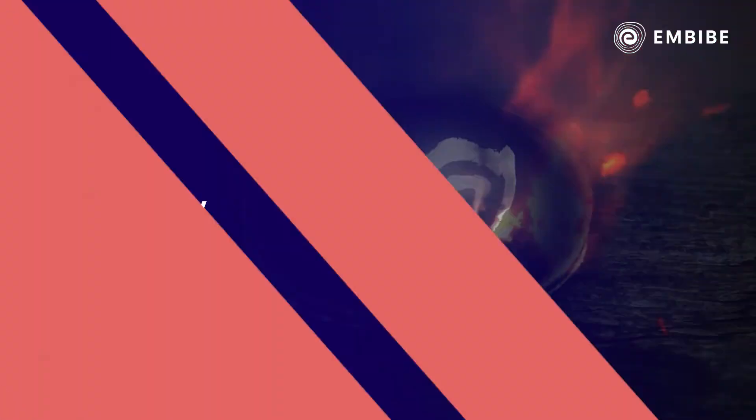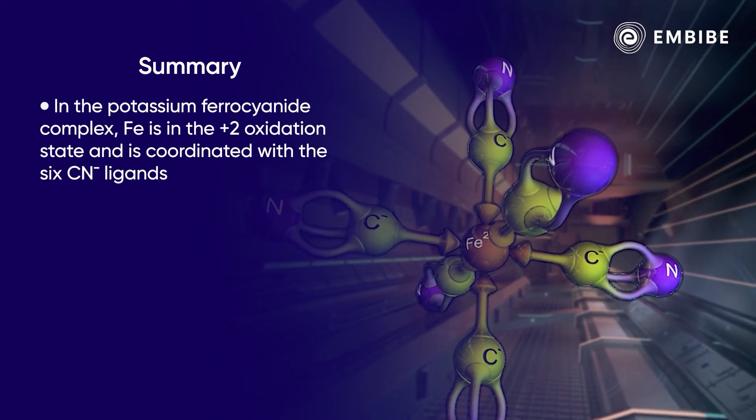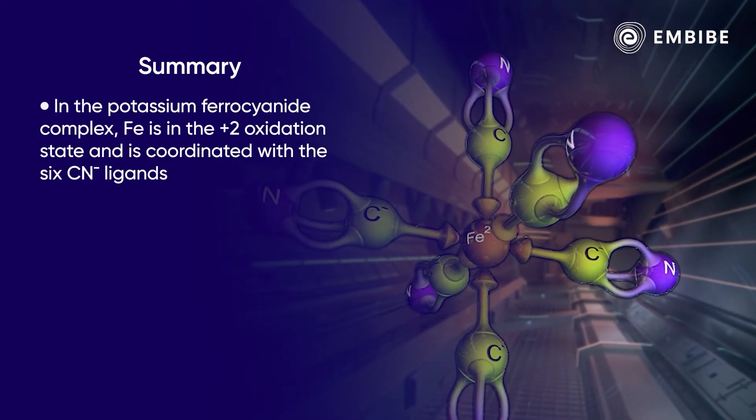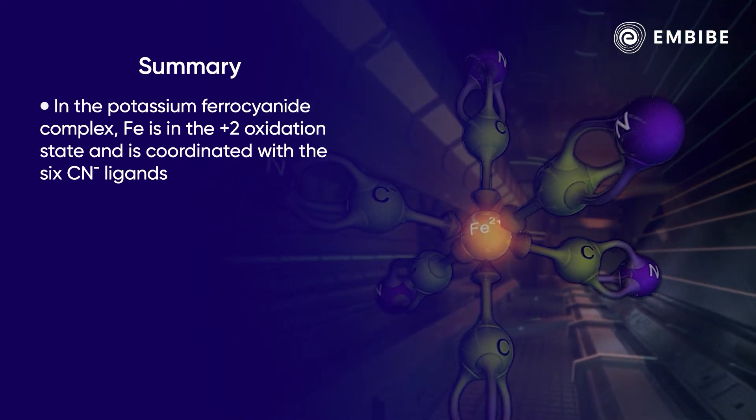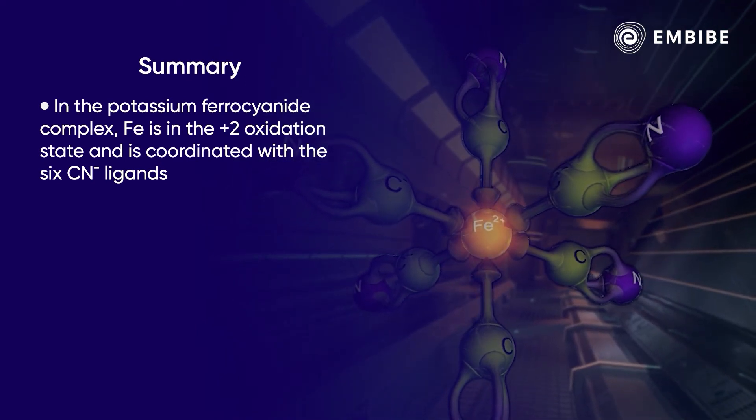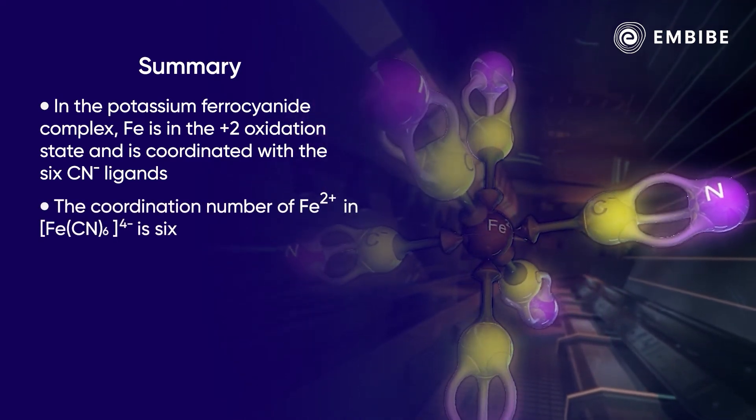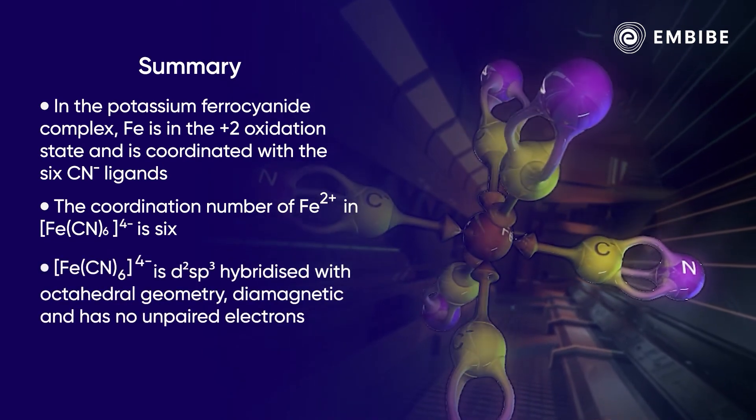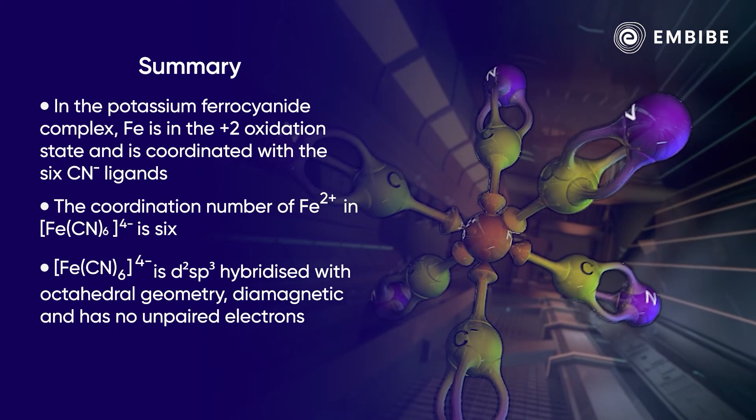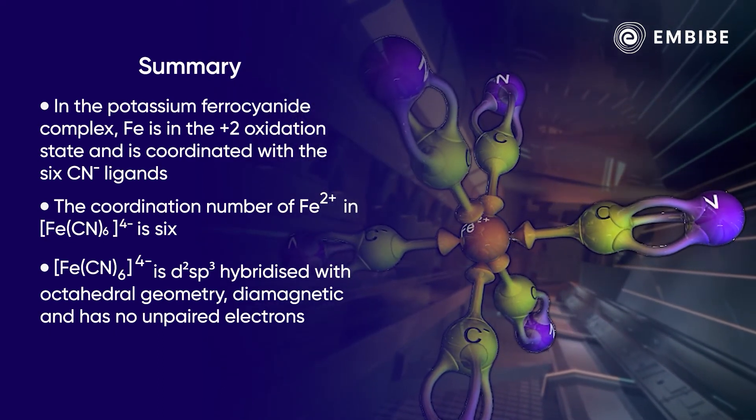Let's summarize. In the potassium ferrocyanide complex, the iron atom Fe is in the +2 oxidation state and is coordinated with six CN- ligands. Thus the coordination number of Fe2+ in this complex is six. It has been found that [Fe(CN)6]4- is diamagnetic. Thus it involves d2sp3 hybridization, as in this hybridization there are no unpaired electrons, and its geometry is octahedral.